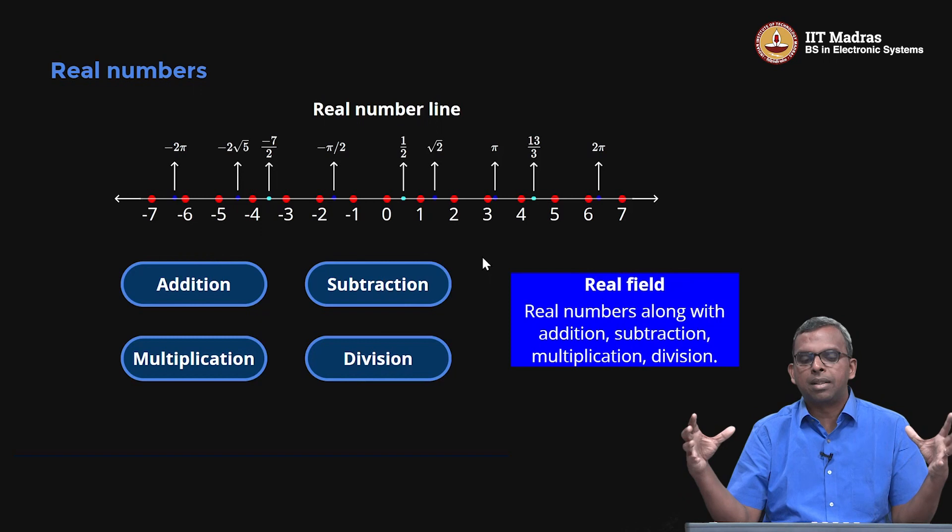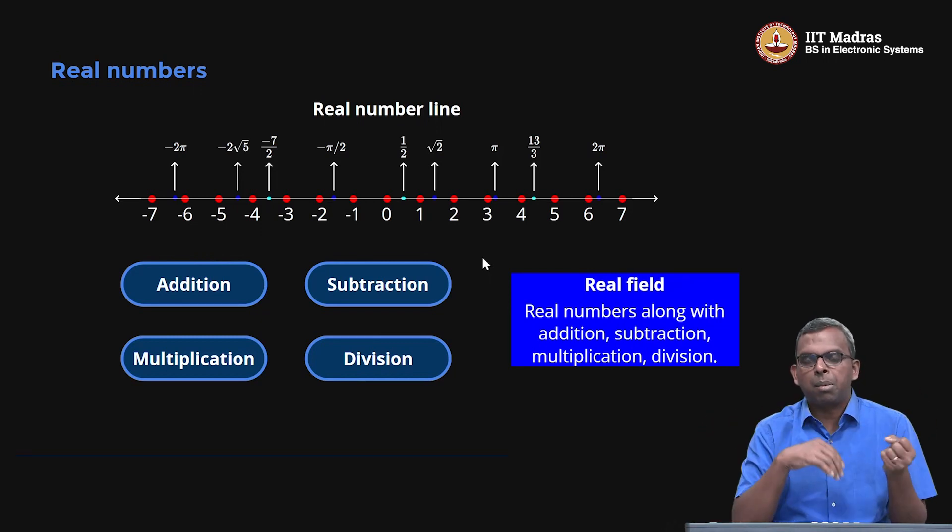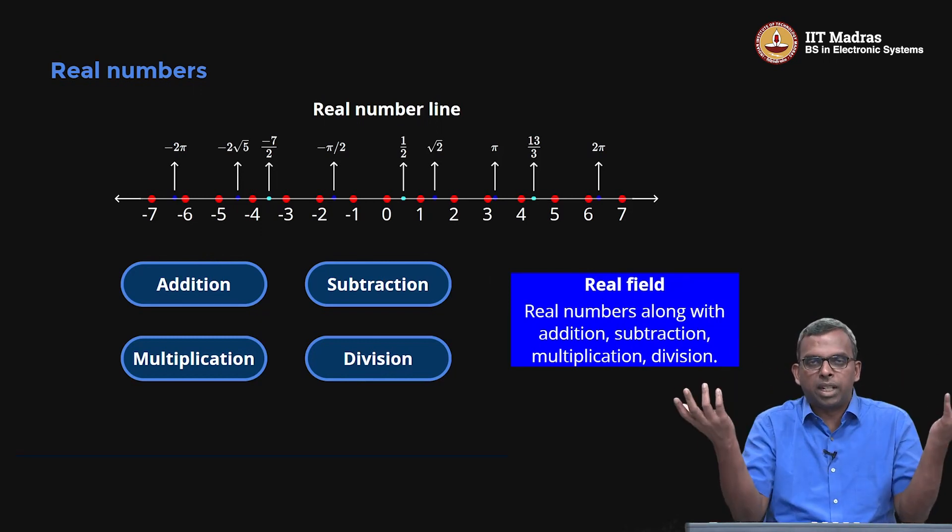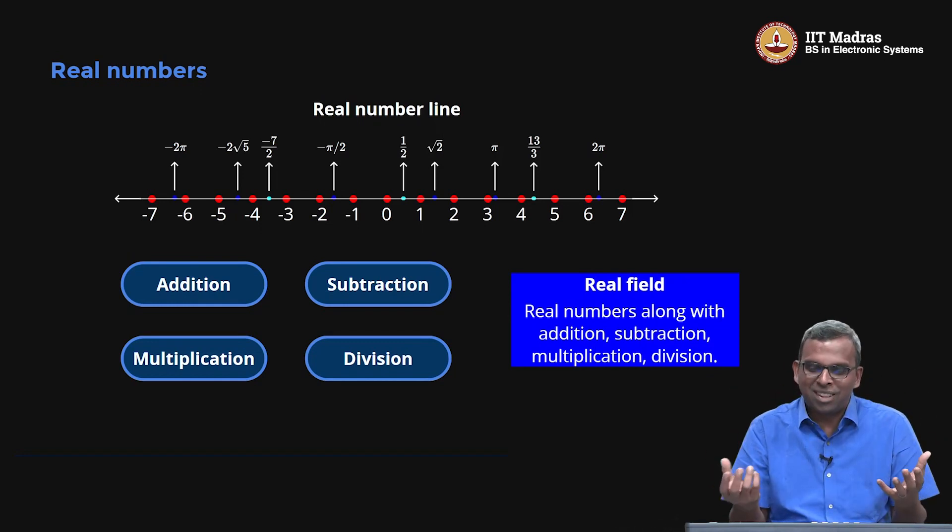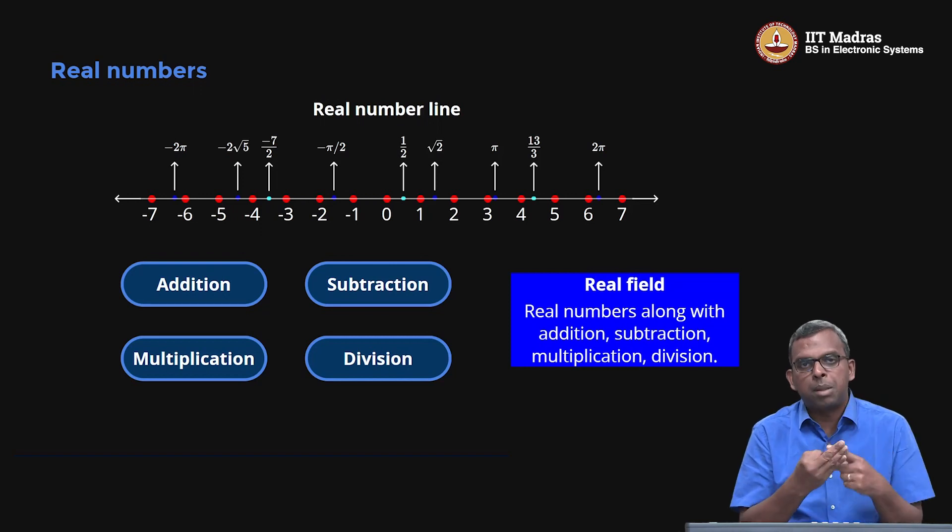A field is a set of numbers where you can do addition, subtraction, multiplication, division without going outside, in a consistent manner. I know I'm oversimplifying—there's a very proper rigorous definition for field. For our purposes, this is what we need. Any field is some set of numbers where you can do all four operations without getting out of the set, and they should have meaningful relationships.